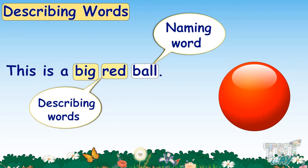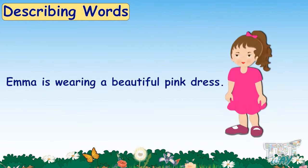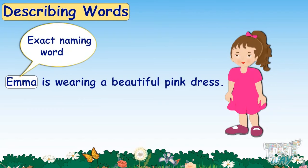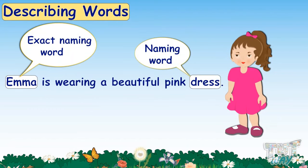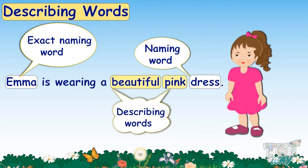Let's have some more examples. Emma is wearing a beautiful pink dress. Here, Emma is an exact naming word, as it is the name of a particular person. Dress is also a naming word, as it is the name of a thing. Beautiful and pink are describing the dress — what kind of a dress is it? It is beautiful and pink. So, beautiful and pink are the describing words for the naming word, dress.